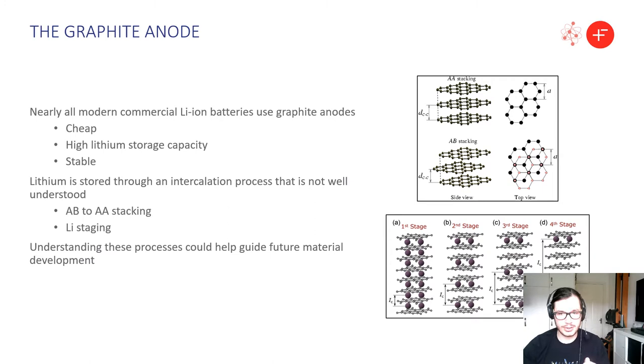Now the process in which lithium is stored is not as well understood as we would like. We're going to be looking at two specific types of phenomenon. The AB to AA stacking whereby the graphite in its ground state is in this staggered AB state and as more and more lithium is intercalated into it it shifts to this AA state.